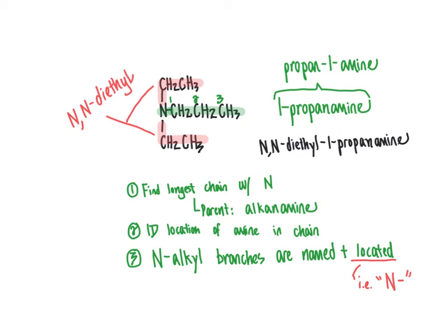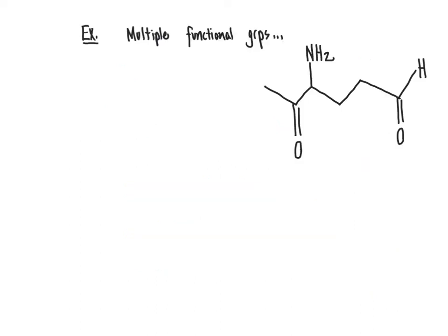Now let's do another example where we blend in the possibility of multiple functional groups occurring within the same molecule. In this example, we have a molecule with not just an amine functional group, but also an aldehyde group and a ketone group. To determine the IUPAC name, we need to think back to our hierarchy for how we determine the parent name, where carboxylic acids are at the top of the list.